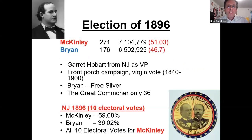One of Cleveland's problems on becoming president was inheriting the Panic of 1893, which sent his administration into a funk and helped William McKinley get elected in 1896. McKinley ended this whole era of close elections with a very sizable victory of 51%, and was a very popular candidate.